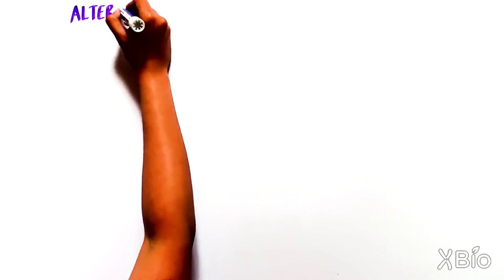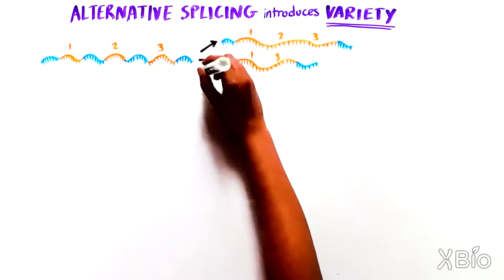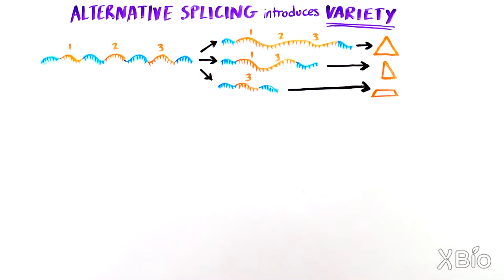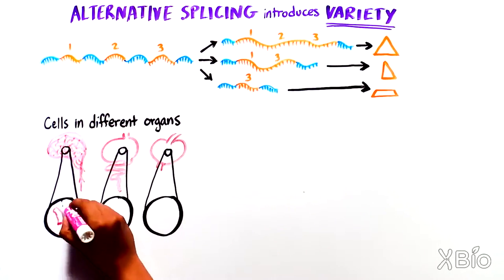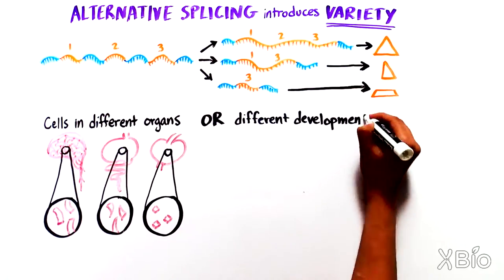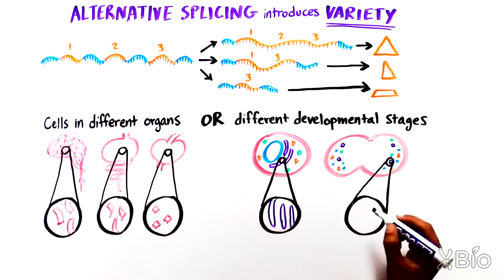A lot of variety can be introduced this way. This allows cells to create many different proteins from just a small number of RNA messages. Cells in different organs, or cells that are at different stages of development, can use alternative splicing to produce proteins suited for their unique functions.